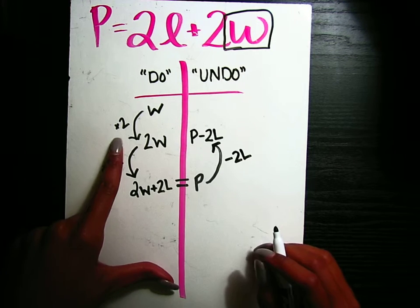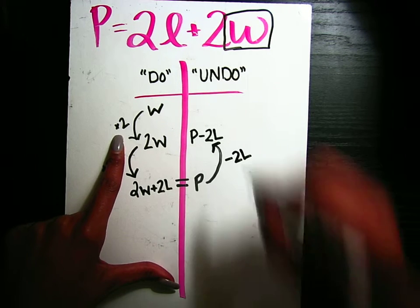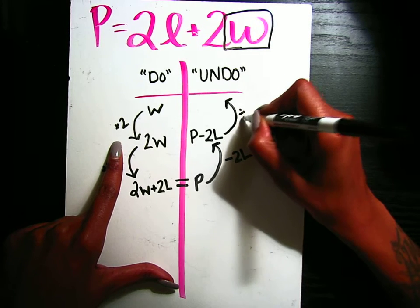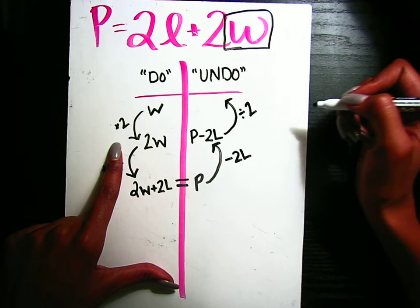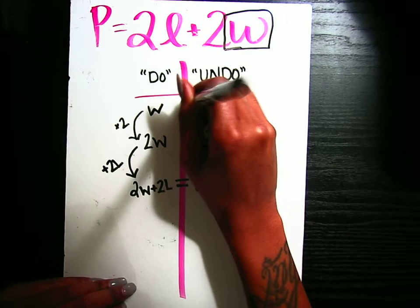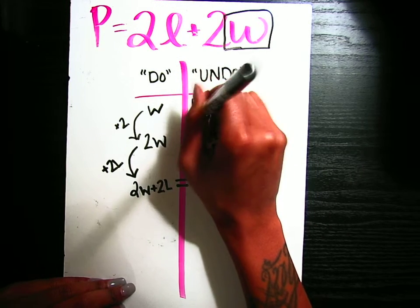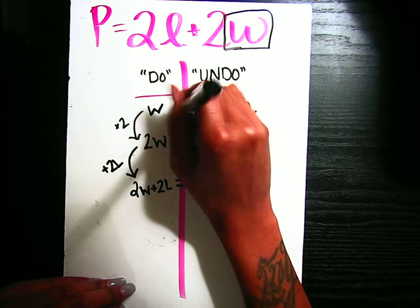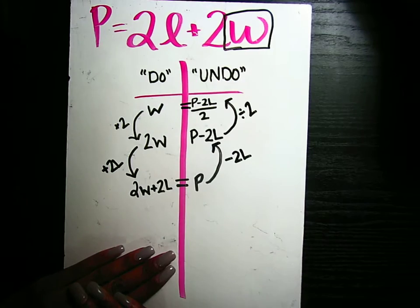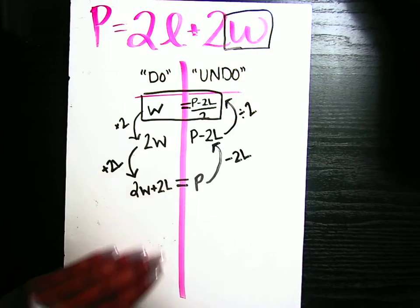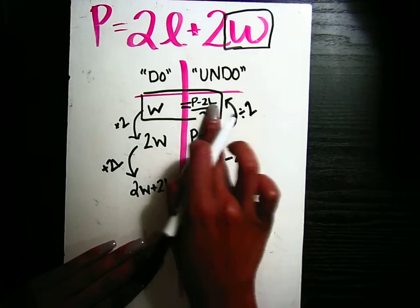And then the same thing. Here we multiplied by 2. So when we undo, we're going to divide by 2. So we're going to have P minus 2L divided by 2. We made it back to the top. So W is equal to P minus 2L divided by 2.